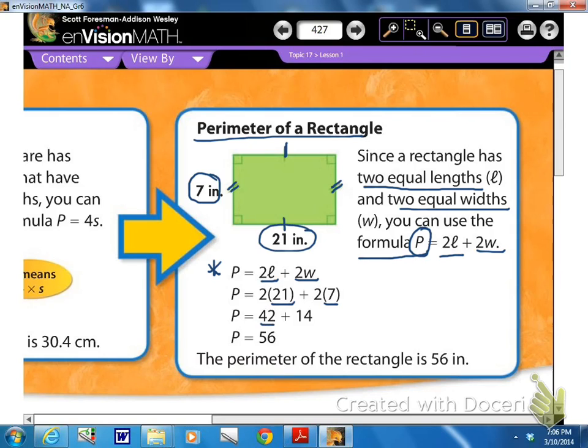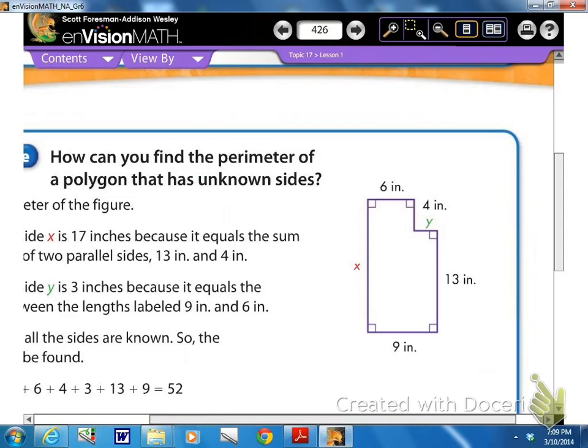2 times 21 is 42, and the product of 2 and 7 is 14, add it together, and the perimeter of this rectangle is 56 inches. Make sure you always put your units on there. All right, back on page 426.